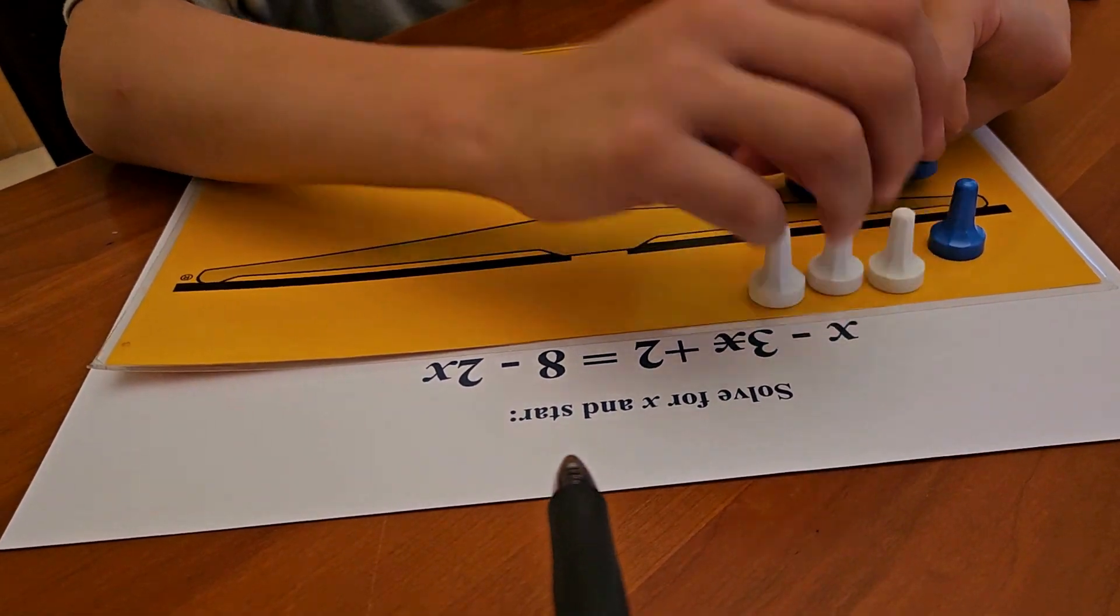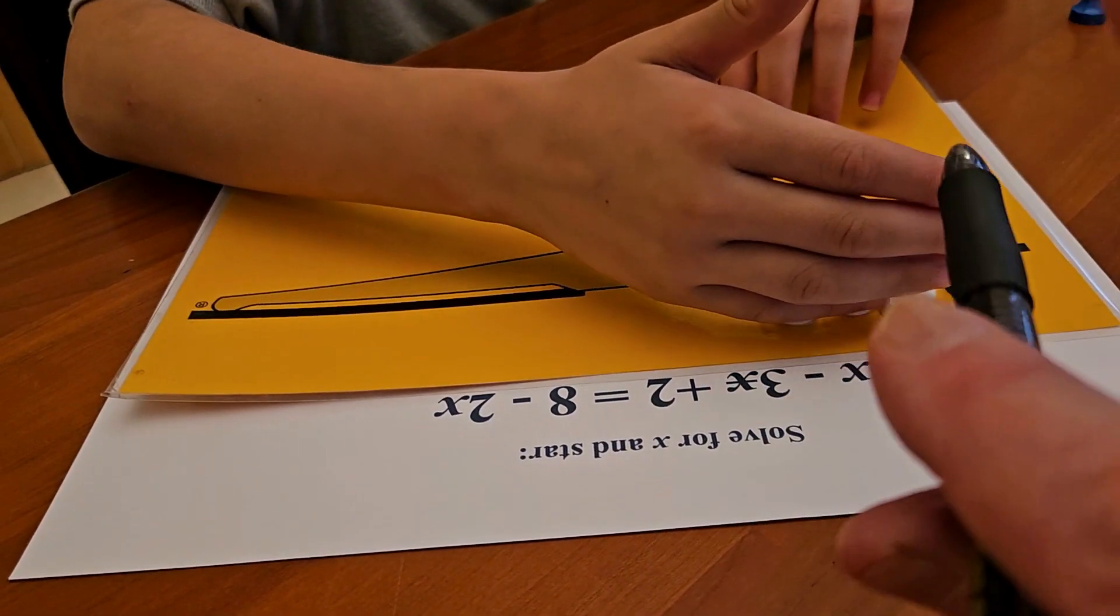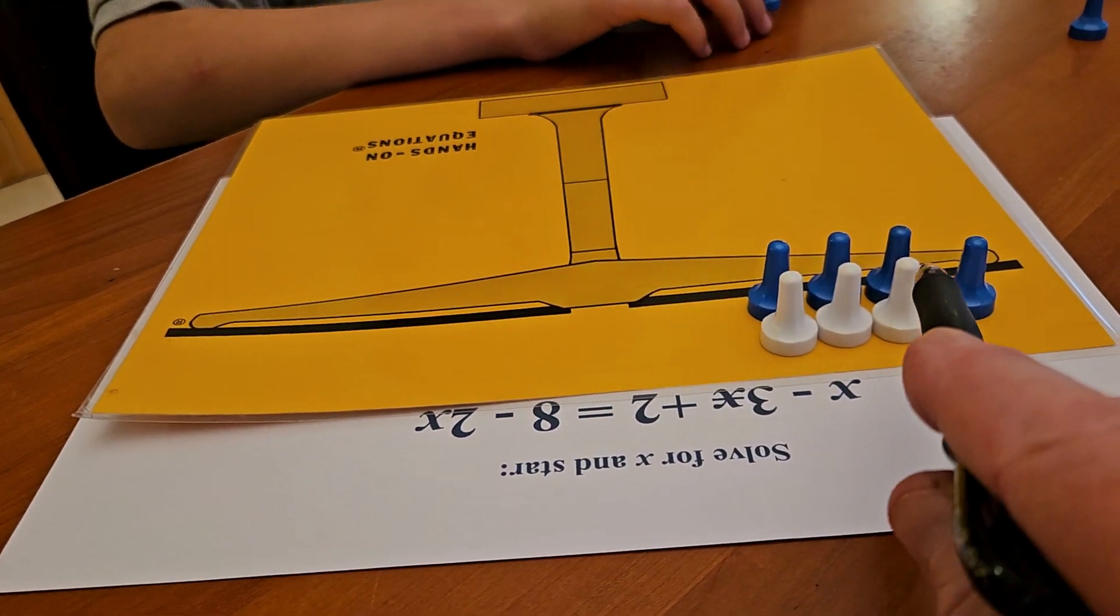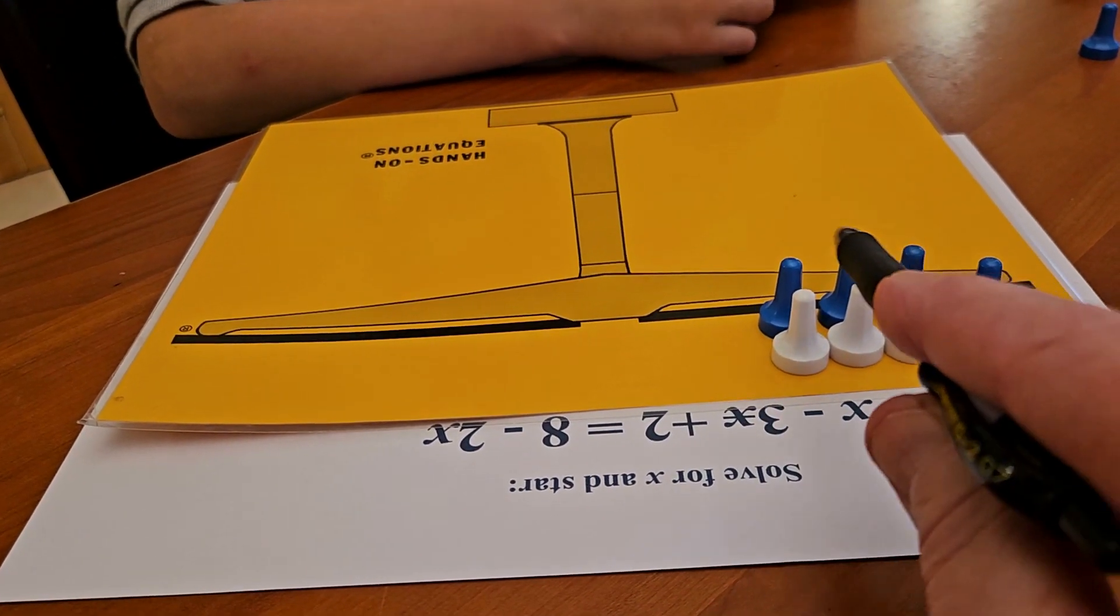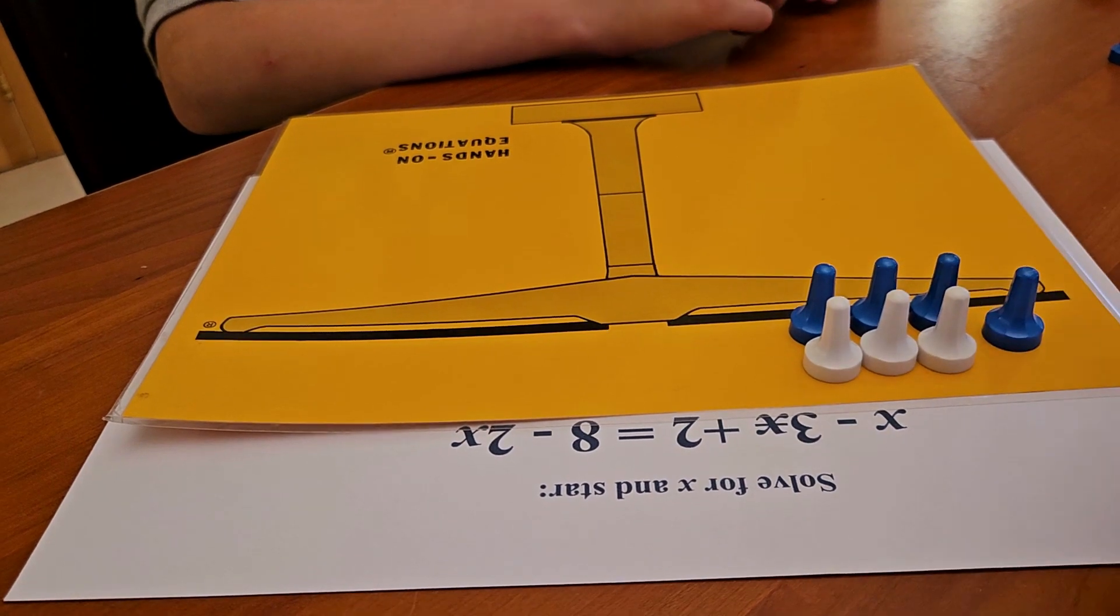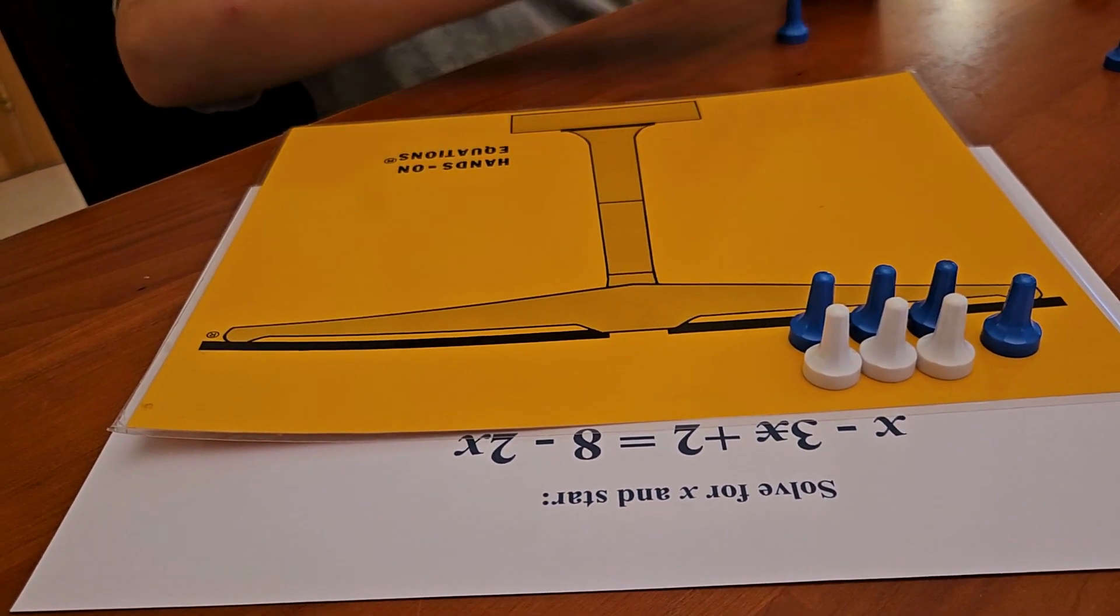Okay, but we have no stars to take away. So the first thing you're doing is you're adding three pairs of opposites because how much is that worth, the three pairs of opposites? It's worth zero. And now you can take away the three stars.